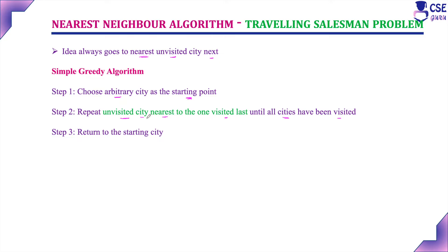Repeat: visit the unvisited city nearest to the one visited last, until all the cities have been visited. Step 3: return to the starting city. Once you have visited all the cities exactly only once, return back to the starting city. Note that a visited city should not be visited again.